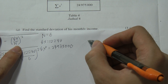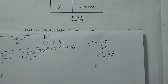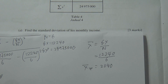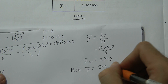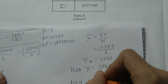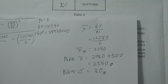We find the mean: mean equals sum of x divided by n, which is 12240 divided by 6, giving 2040. Since his son gives him 500 every month, the new mean is 2040 plus 500, which equals 2540.